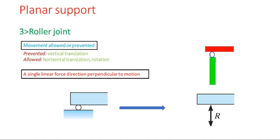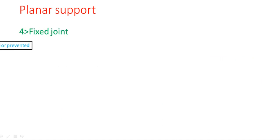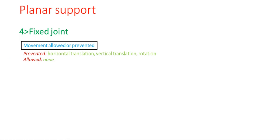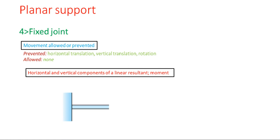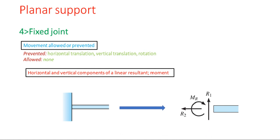Next is the fixed joint. Fixed connections are very common and demand greater attention during construction because they are often the source of building failure. Fixed supports can resist vertical and horizontal forces as well as moments. Since they restrain both rotation and translation, they are also known as rigid supports. A structure only needs one fixed support to be stable. The representation of fixed supports always includes two forces — one horizontal, one vertical — and a moment.